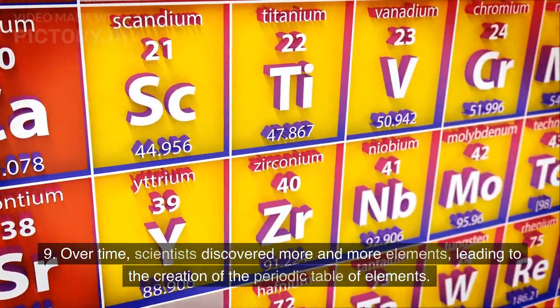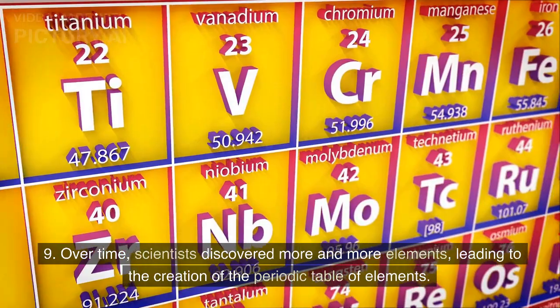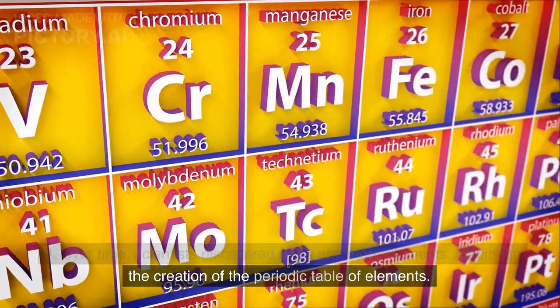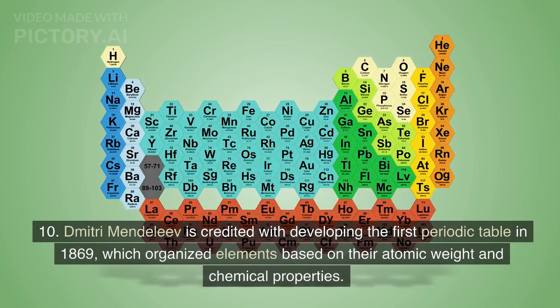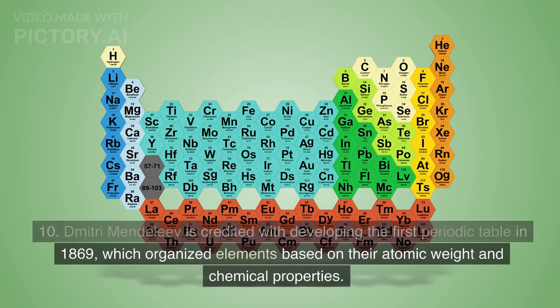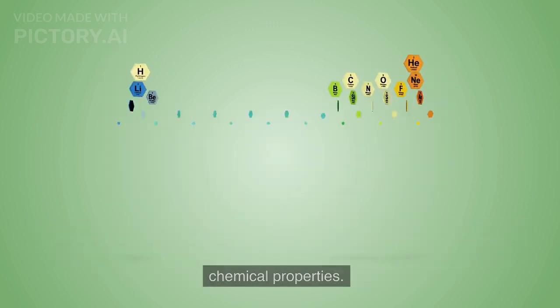Over time, scientists discovered more and more elements, leading to the creation of the periodic table of elements. Dmitry Mendeleev is credited with developing the first periodic table in 1869, which organized elements based on their atomic weight and chemical properties.